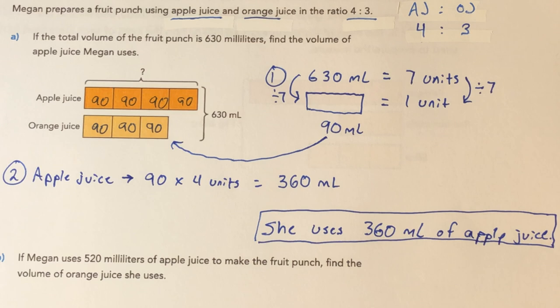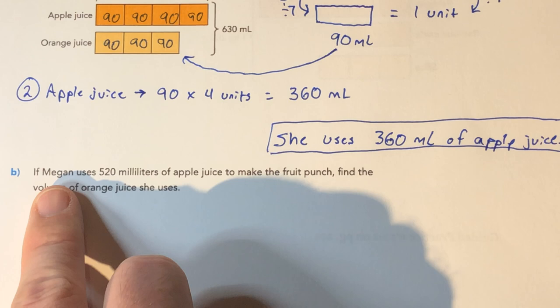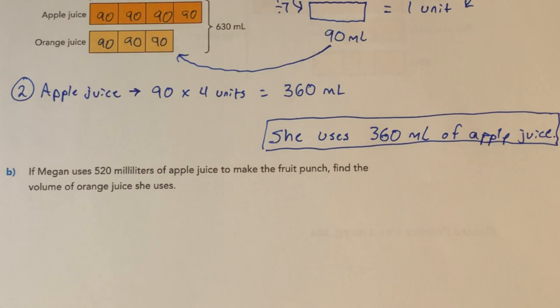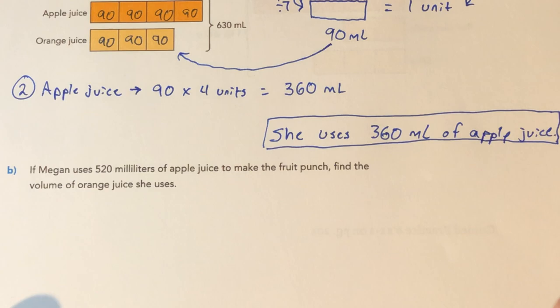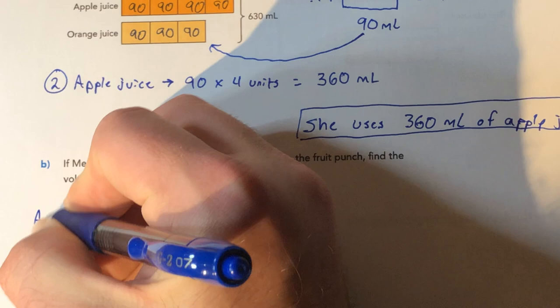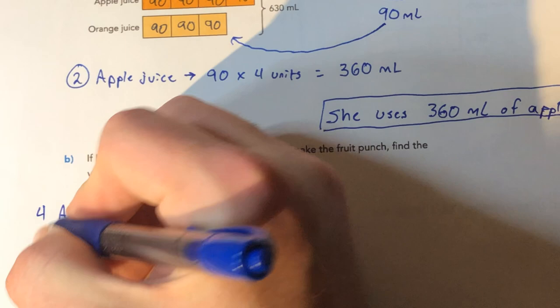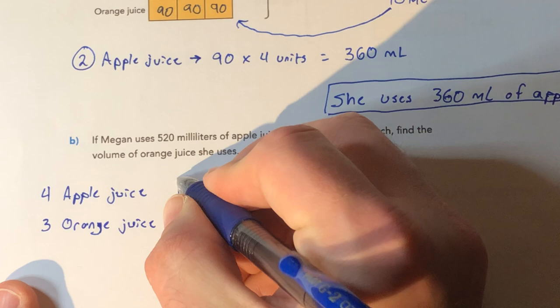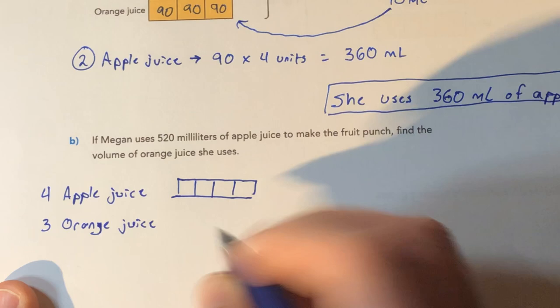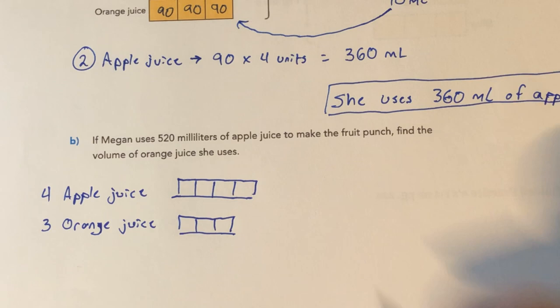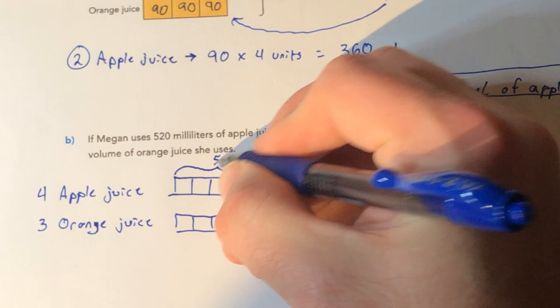Our next problem — same storyline but different scenario. If Megan uses 520 milliliters of apple juice to make the fruit punch, find the volume of orange juice she uses. We are using the same ratio — apple juice to orange juice, 4 to 3. No bars were already drawn for me, so we're going to do it from scratch. Apple juice gets 4 units, orange juice gets 3. Megan uses 520 milliliters of apple juice, so I'm going to put a bracket on apple juice and say that is 520 milliliters.